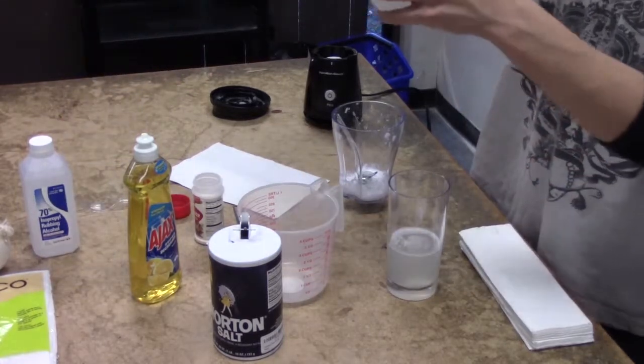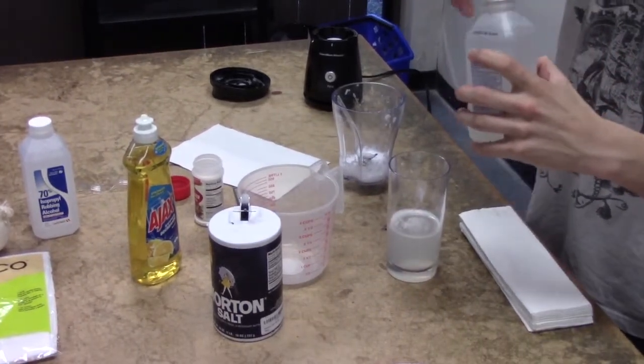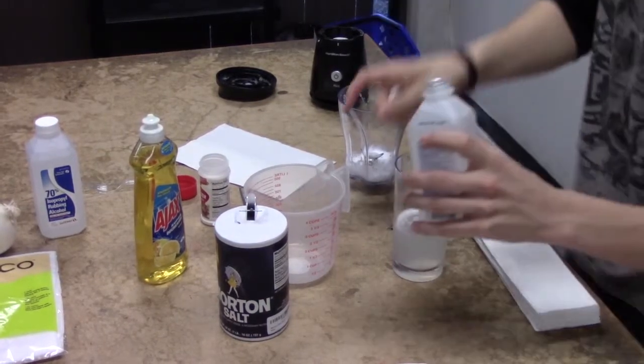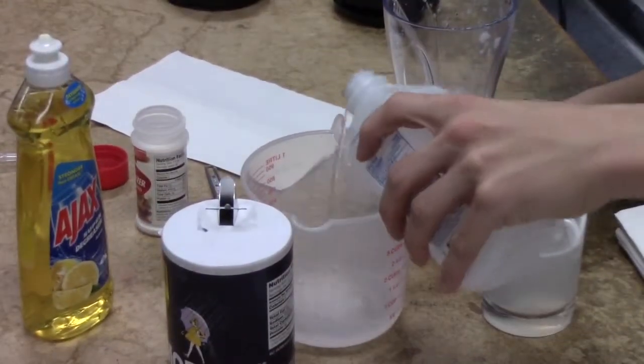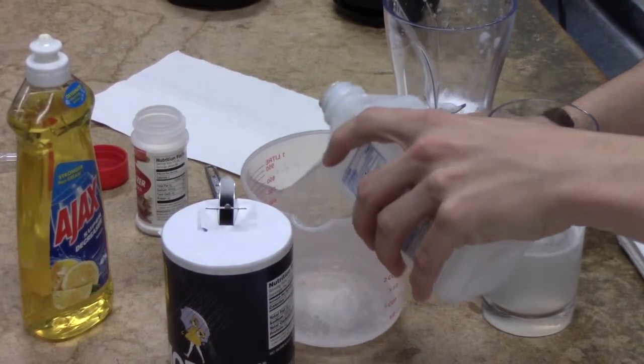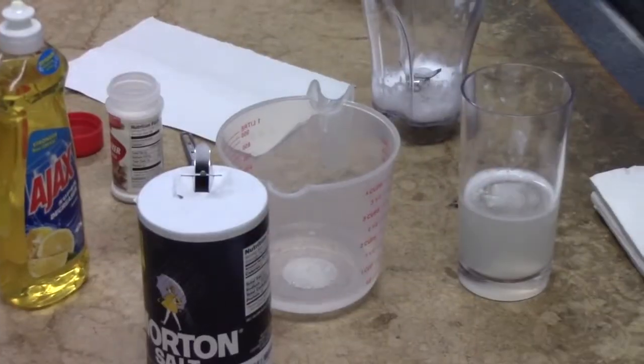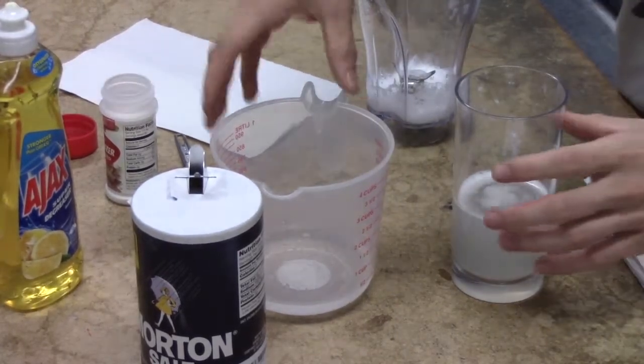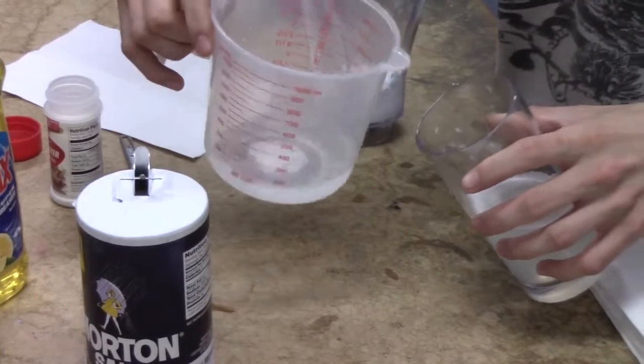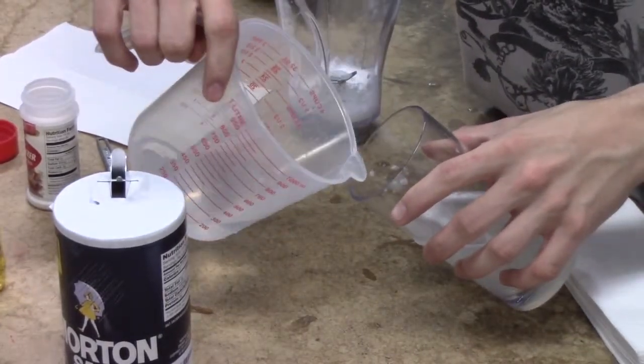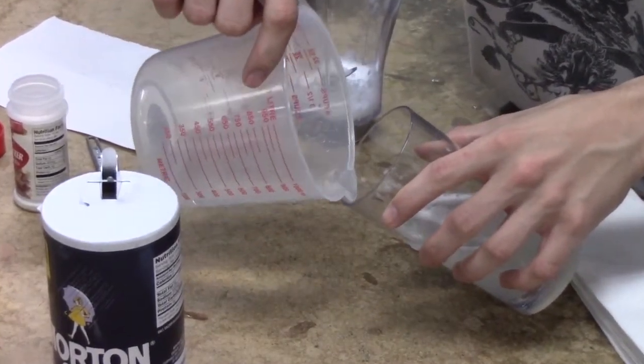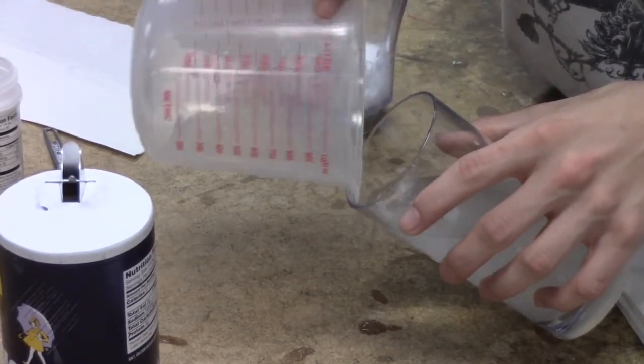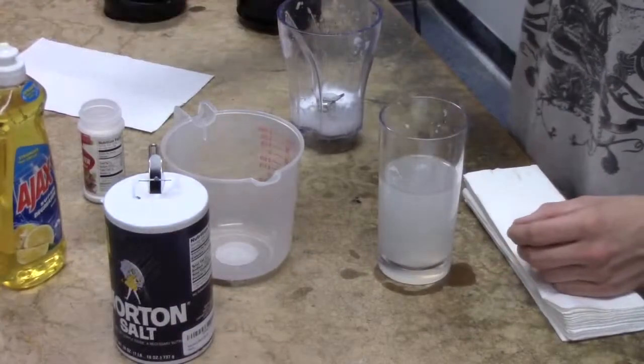Now that all the soap has been taken out, we're going to add our rubbing alcohol into the measuring cup until we have about one third of a cup. Add it around there. Perfect. Now we're going to lean the glass with the onion juice over and slowly pour in the rubbing alcohol. Very gently.